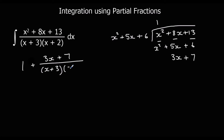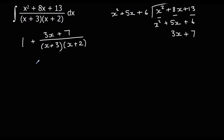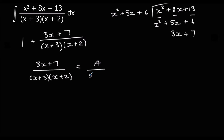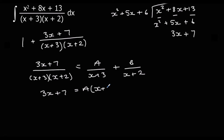We rewrite it as 1 plus (3x plus 7) over (x plus 3)(x plus 2). Now we've got something we can split into partial fractions. We keep the 1 aside and split (3x plus 7) over (x plus 3)(x plus 2) as A over (x plus 3) plus B over (x plus 2). Multiplying through by the denominator gives 3x plus 7 equals A times (x plus 2) plus B times (x plus 3).